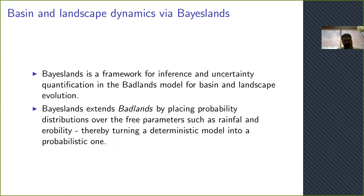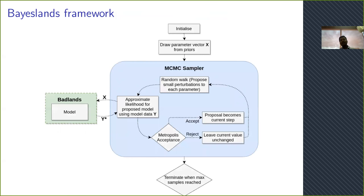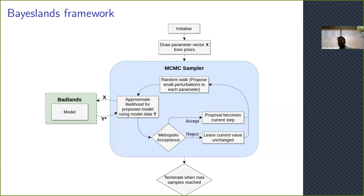Badlands stands for Basin and Landscape Dynamics model, written in Python, an in-house developer model at the University of Sydney. The MCMC sampling process: you initialize, draw parameters from the priors. Unlike evolutionary algorithms that use sophisticated crossover and mutation, we just do a random proposal — we add a small random noise to all values. Then we give these values to Badlands, let the model evaluate the likelihood, and based on the Metropolis acceptance criteria we either accept or reject. This process goes on for thousands of samples.